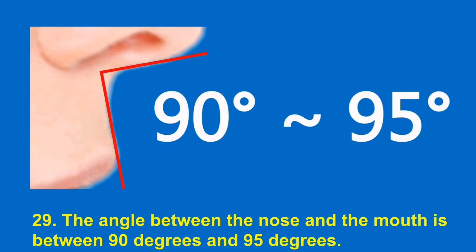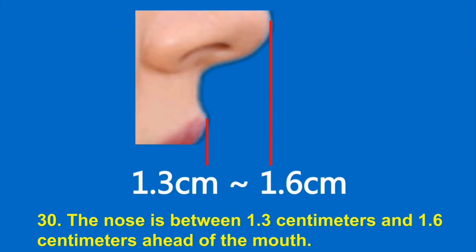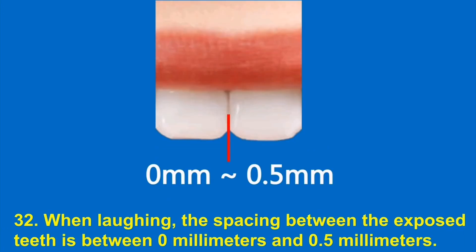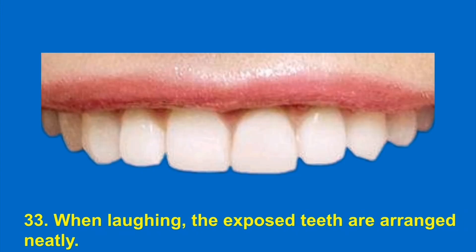28. The mouth inclines forward between 10 degrees and 15 degrees. 29. The angle between the nose and the mouth is between 90 degrees and 95 degrees. 30. The nose is between 1.3 cm and 1.6 cm ahead of the mouth. 31. When laughing, the exposed part has no gum above the upper end of the tooth. 32. When laughing, the spacing between the exposed teeth is between 0 mm and 0.5 mm. 33. When laughing, the exposed teeth are arranged neatly. Bye!